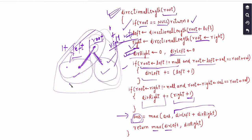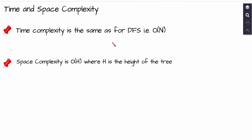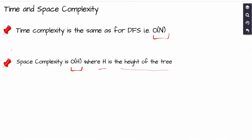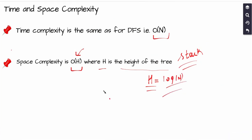The time complexity of this solution is O(n) since it is essentially one depth-first traversal of the binary tree. The space complexity is O(h) where h is the height of the tree — this represents the stack space consumed by recursive function calls, as the maximum number of concurrent calls equals the tree height. The height of a balanced binary tree is log₂(n). The auxiliary space is constant since we use no extra data structures.